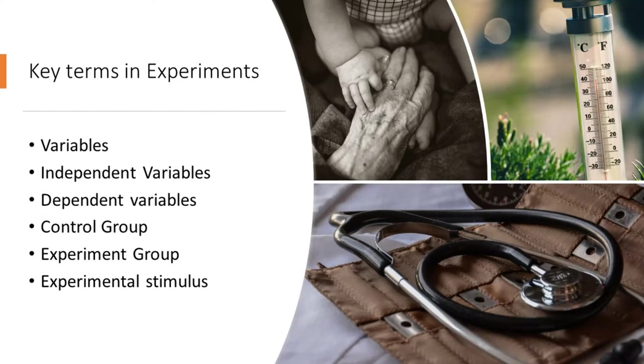The key terms you need to know are: variables, independent variables, dependent variables, control group, experiment group, and experimental stimulus.